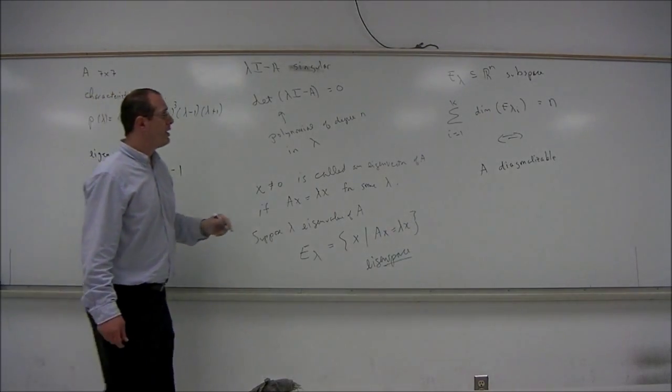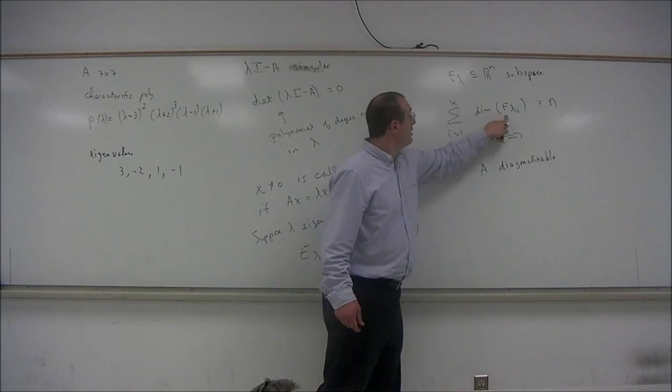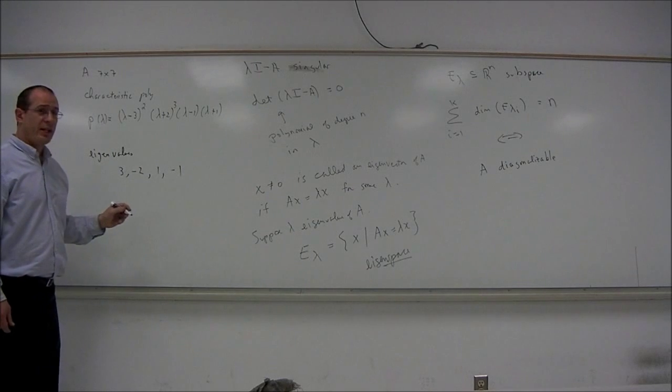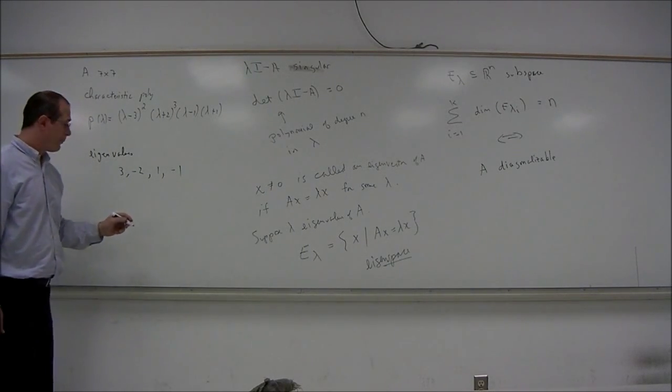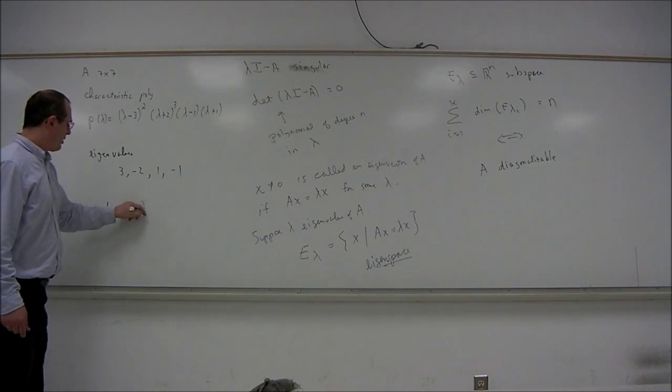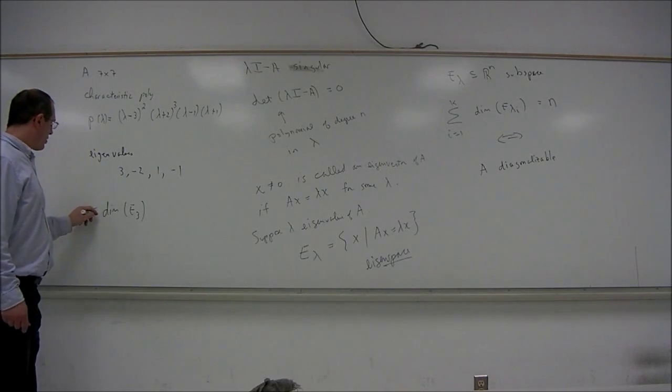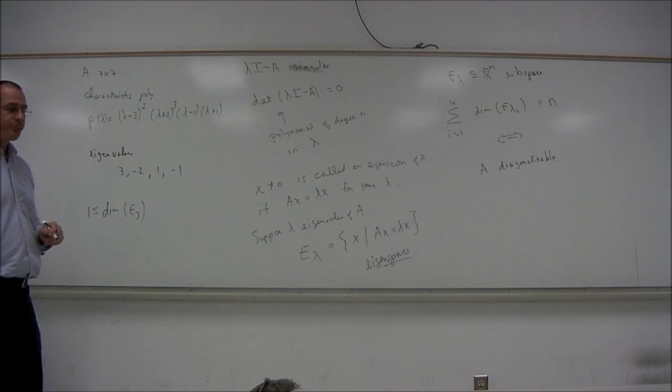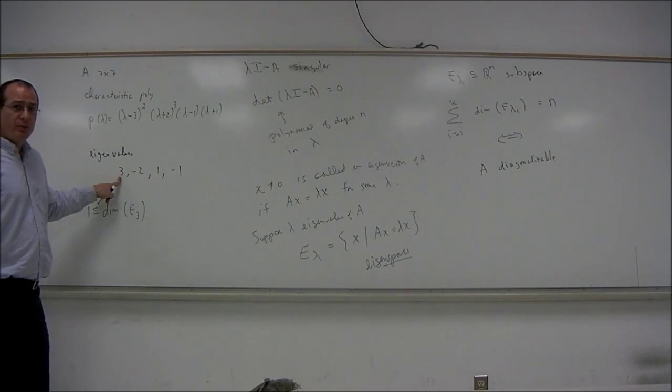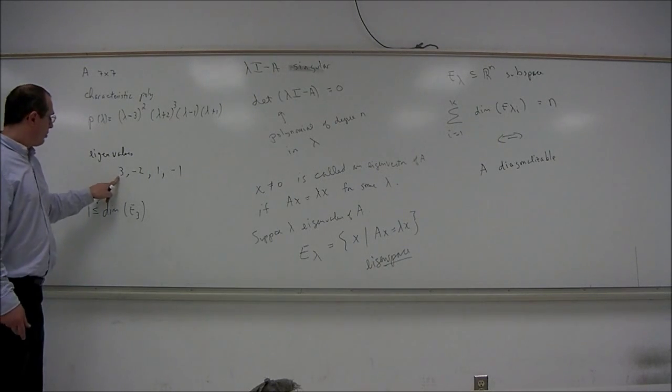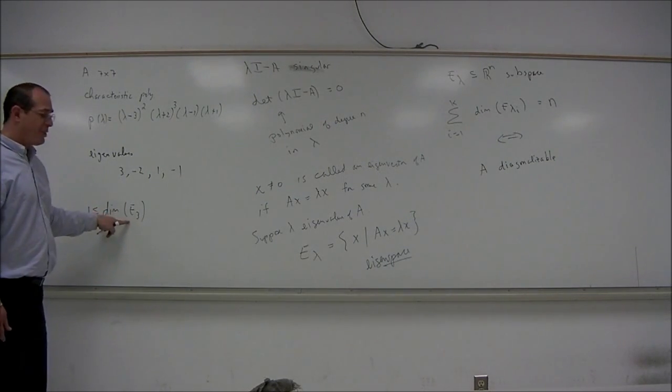So we're interested in the dimension of the eigenspaces. So for each eigenvalue, here is a general rule. The dimension of an eigenspace, let's talk about the eigenspace associated with the eigenvalue of 3. The dimension is always at least 1. Because 3 is an eigenvalue, there is a non-zero eigenvector. So that vector will be in the subspace E3. So it will be at least one-dimensional.